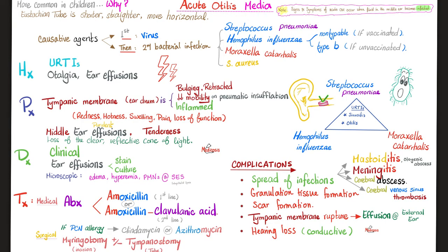Acute otitis media was discussed in the last video. Signs and symptoms of acute otitis media occur when the ear is infected. Acute otitis media is more common in the young because the auditory tube is shorter, straighter, and more horizontal. Causative organisms include the bacterial triad. History of recent upper respiratory tract infection, ear pain, and purulent ear effusions characterize acute otitis media. The tympanic membrane is inflamed, bulging, or retracted, with decreased mobility on pneumatic insufflation otoscopy. There is tenderness and we lose the clear reflective cone of light due to the bulging of the tympanic membrane.